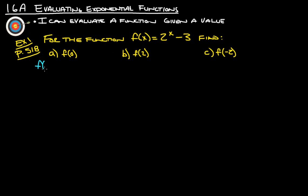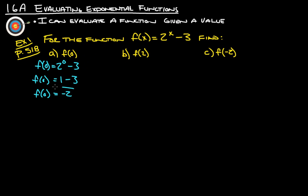So we have f of 0 should equal, from this right here, 2 to the 0, because we're plugging in 0 for x minus 3. Anything to the 0 power is 1, minus 3 gives us that f of 0 is negative 2.